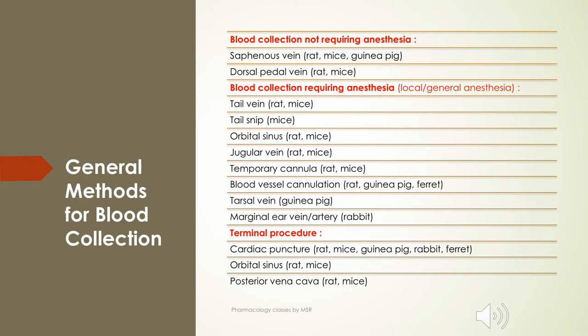Blood collection methods can be grouped as: without anesthesia — saphenous vein method, dorsal pedal vein method; with anesthesia — tail vein, tail snip, retroorbital sinus, jugular vein, temporary cannula, blood vessel cannulation, tarsal vein, and marginal vein. Terminal procedures include cardiac puncture, orbital sinus, and posterior vena cava.